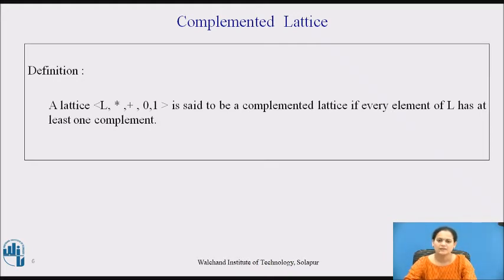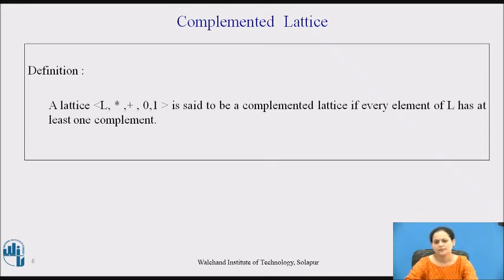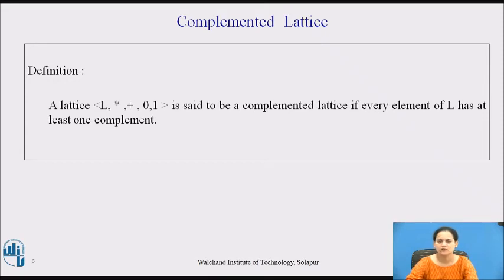The second classification is based on having a complement for every element from the given lattice. L is said to be complemented if for every element present in L it has at least one complement. There is no restriction on the number of complements present, but it must have at least one — which is the minimum requirement to call the lattice a complemented lattice.